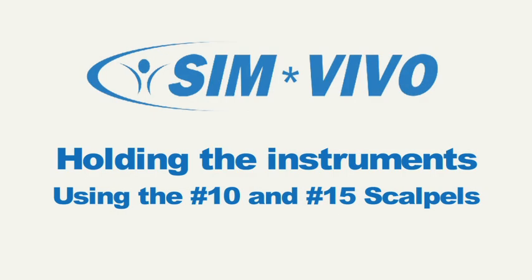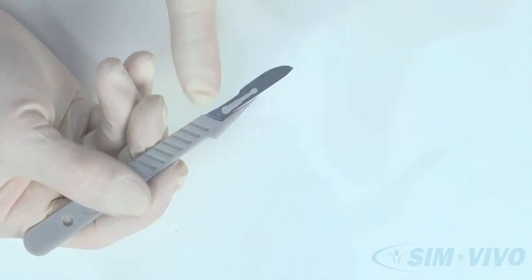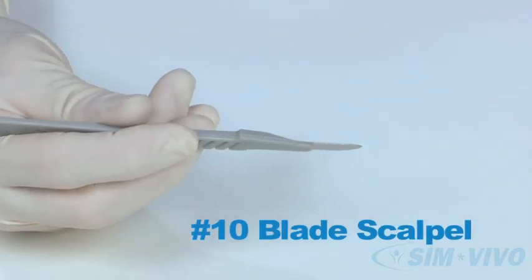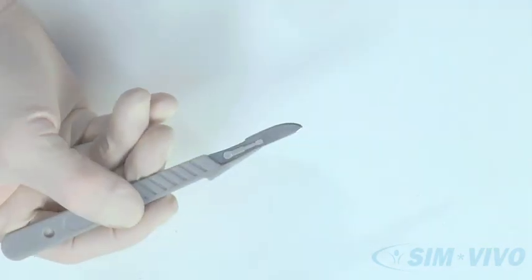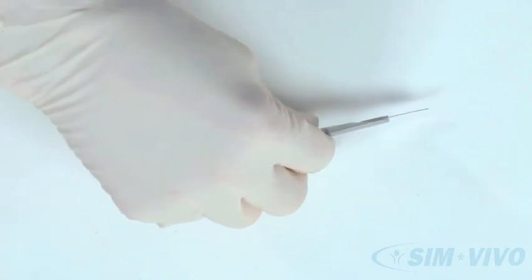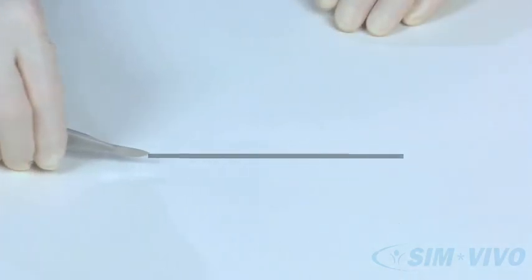There are two scalpels in this module. The larger blade is a number 10 blade and is used for making large, straight incisions. Since the cutting edge is on the long side of the blade, this scalpel is usually held like a violin bow. The scalpel is gently brought along the skin to make the incision.